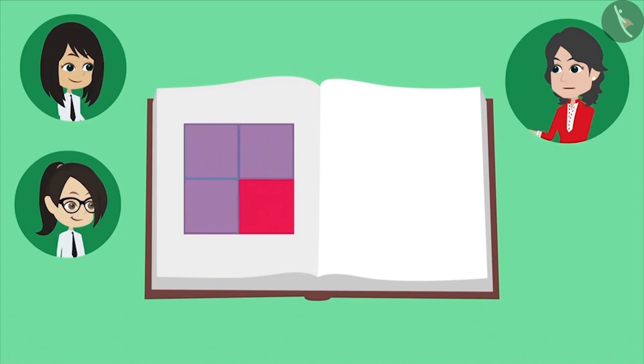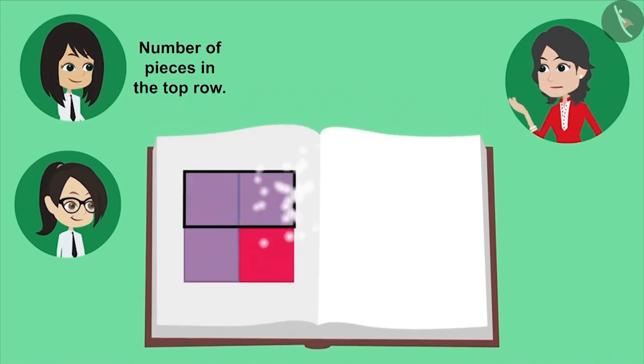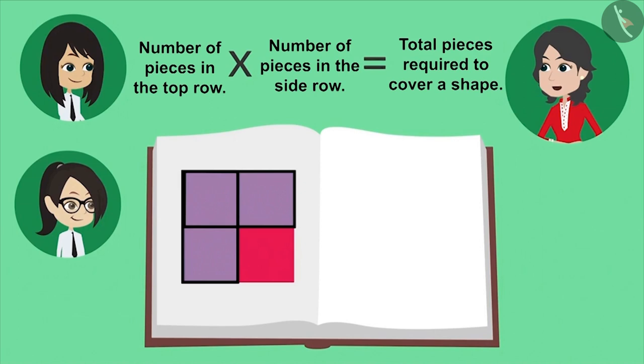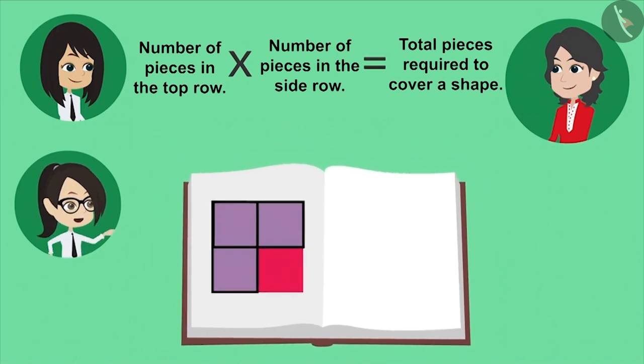You both are right. Now we will multiply the number of pieces placed in the top row by the number of pieces placed in the side row. This will tell us how many pieces will be required to cover this shape. That means to know how many pieces will be required to cover this shape, we have to multiply two by two.